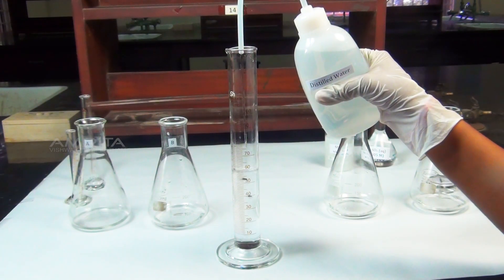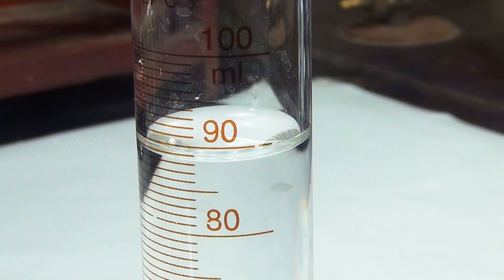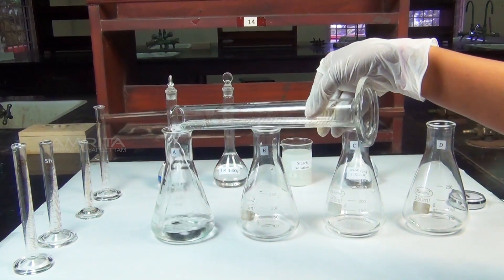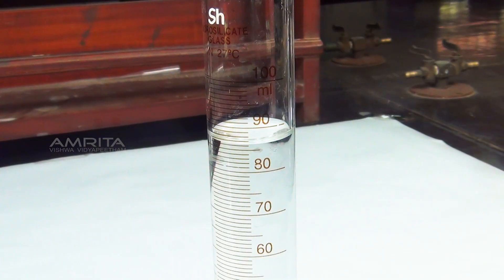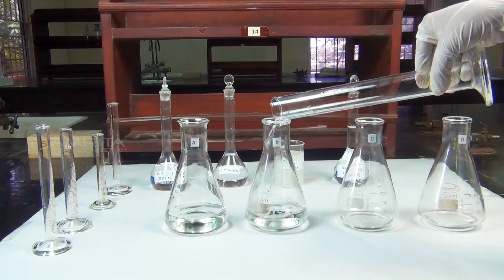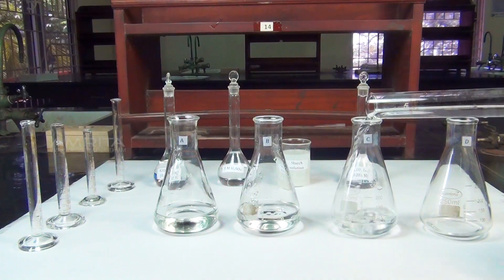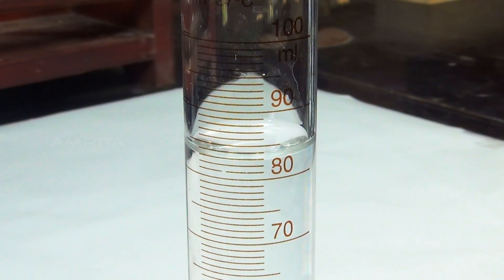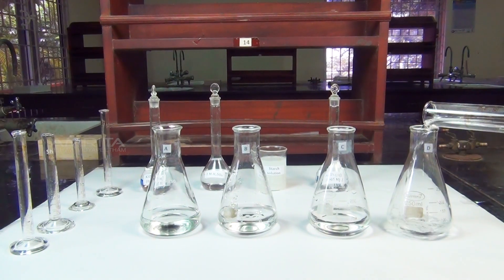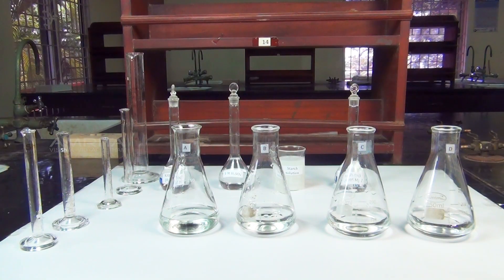Now, using a measuring cylinder, add 88 ml of distilled water to flask A, 86 ml to flask B, 84 ml to flask C and 82 ml to flask D to make the volume of solution 100 ml in each flask.